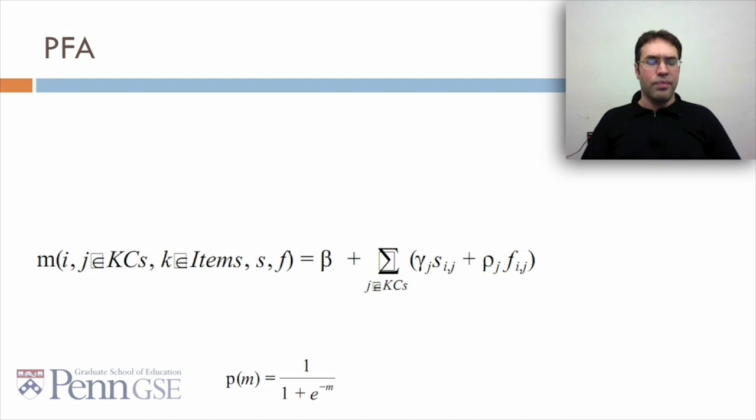So PFA can be expressed mathematically as follows. First you compute m. m is a function of beta, the difficulty, and the sum of the number of successes and failures with their weight parameters, gamma and rho, that students have had on every relevant skill in the problem. You take that m and then you put it through an exponential function.